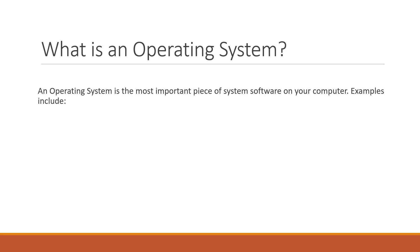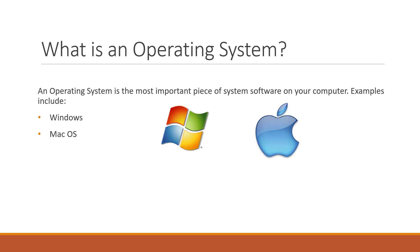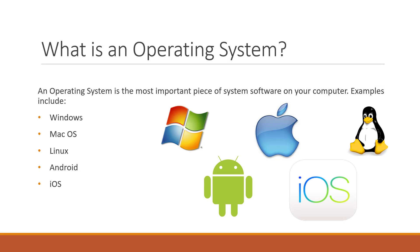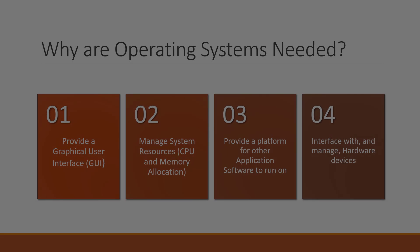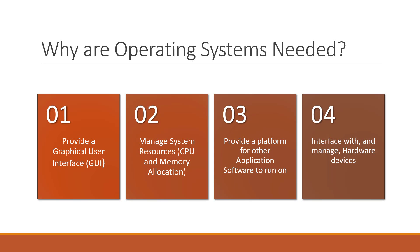Now it's time to look at operating systems. An operating system is the most important piece of software on your computer. Common examples that you may have heard of include Microsoft's Windows, Apple's macOS, and Linux for desktop. Also, there's Android and Apple's iOS for mobile devices. So why do we need operating systems, and why are they the most important pieces of software on the computer?